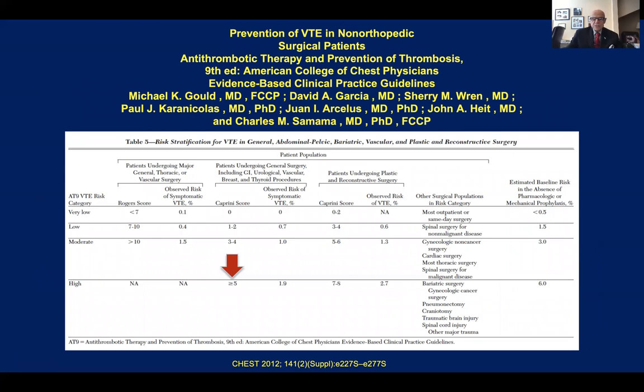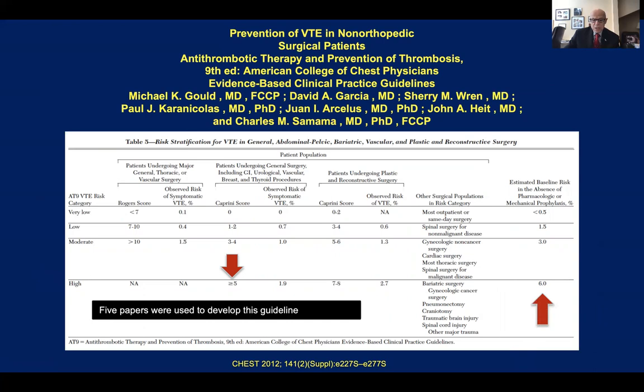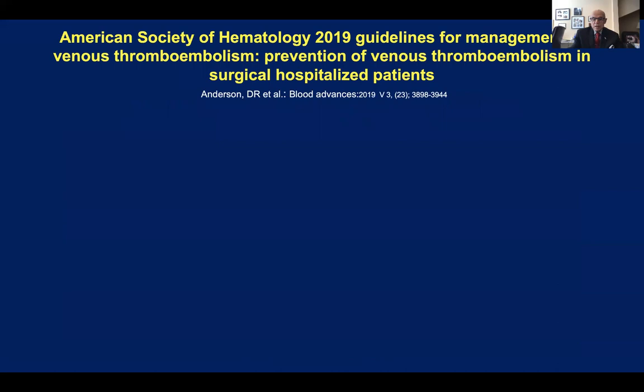Now let's go back to CHESS 2012. For the first time, the CHESS consensus guidelines endorsed individual risk assessment scoring and discussed at length the Caprini score. Looking at the available literature at the time, which was very small, they decided that a score of over five was associated with a 6% incidence of venous thromboembolism. These guidelines were very well received by the public and followed for many years since that time.